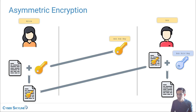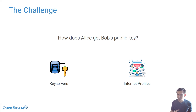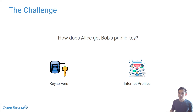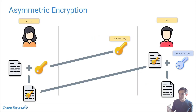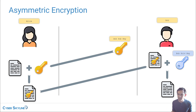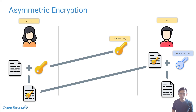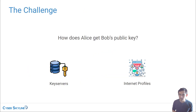Going back to this hypothetical scenario, it poses a question: how does Alice get Bob's public key? She needs his public key in order to send him a message that only he can decrypt. We're assuming Alice and Bob have never met each other, so she needs a way to get his public key.